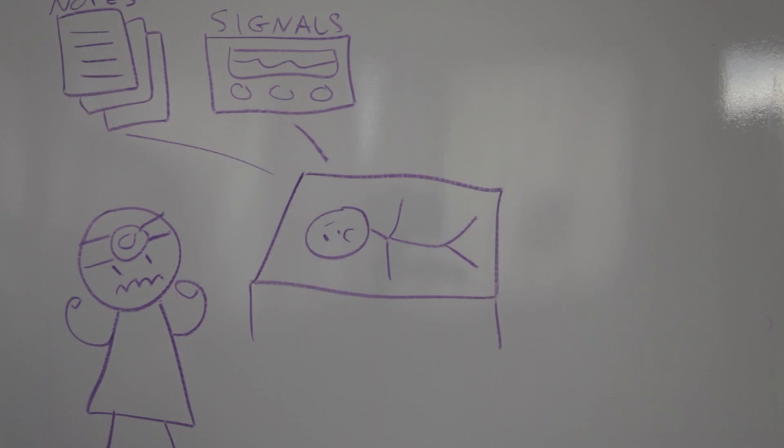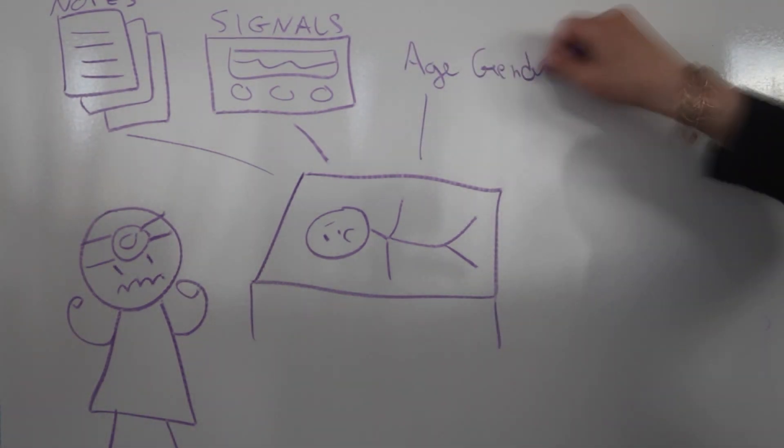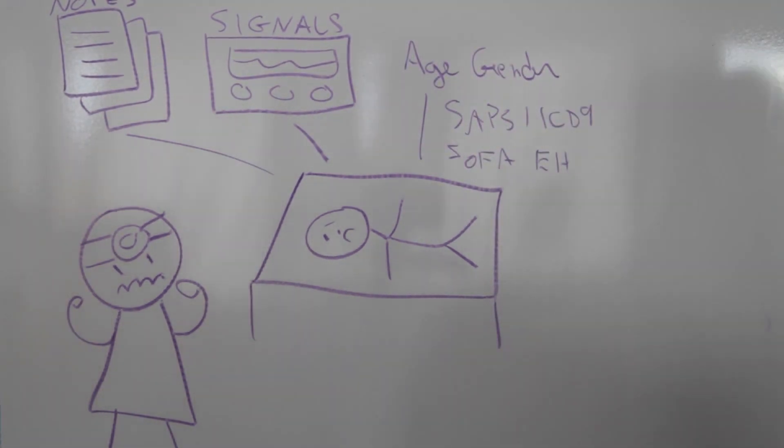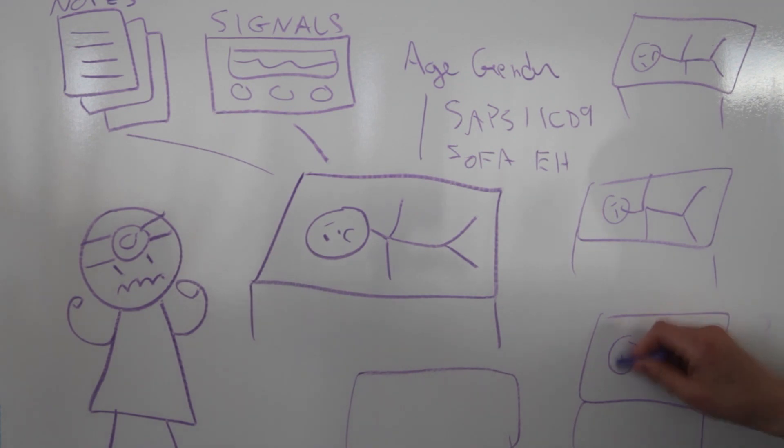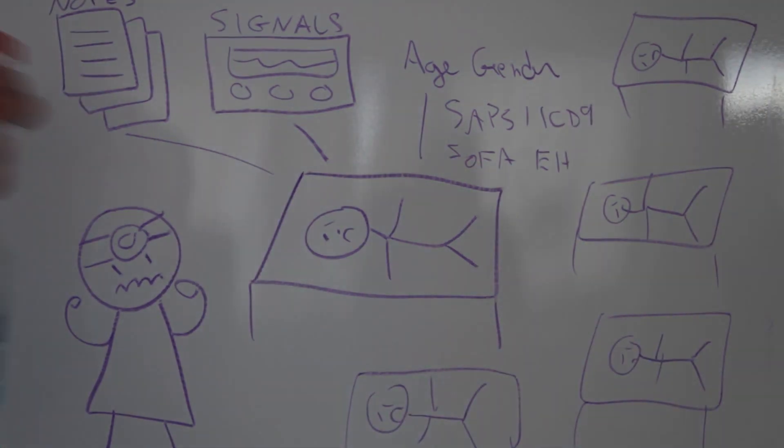Oh yeah, I guess there's also that other stuff like age and gender and acuity scores—seems pretty important to think about. And maybe that would all be okay if there was just one patient, but there are so many patients in a modern ICU.